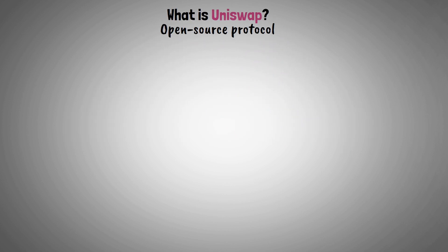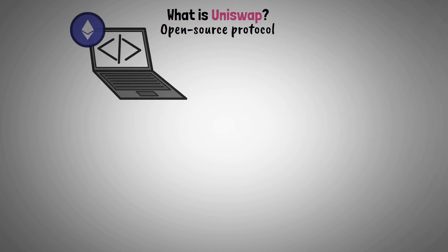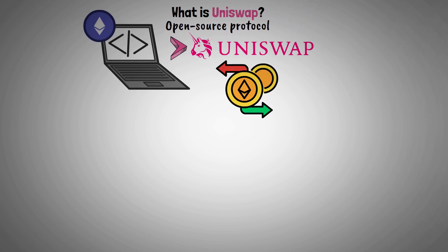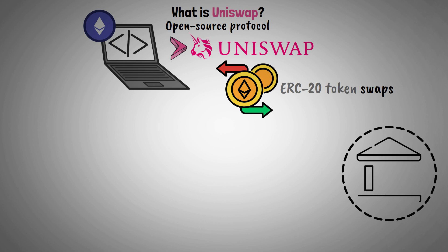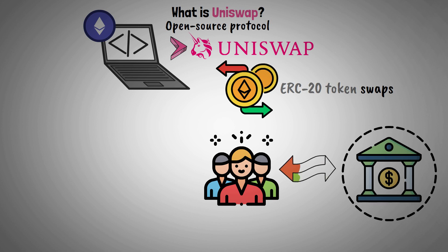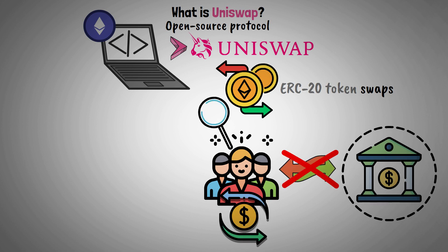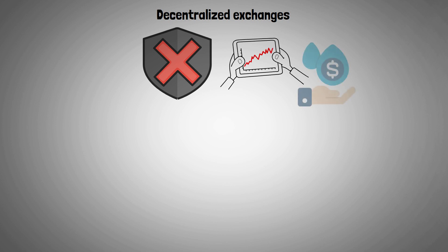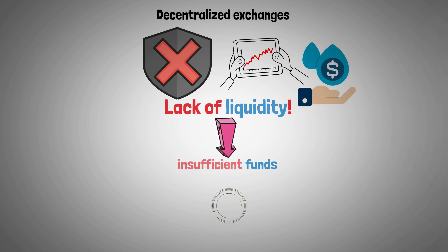An open source protocol developed on top of the Ethereum blockchain, Uniswap is a superb way to streamline ERC-20 token swaps without the need for centralized intermediaries. This implies that users are independent of any centralized resources and can manage their money as they see fit. However, these decentralized exchanges were unable to gain traction with liquidity providers due to a lack of liquidity, such as insufficient funds moving through the platforms.